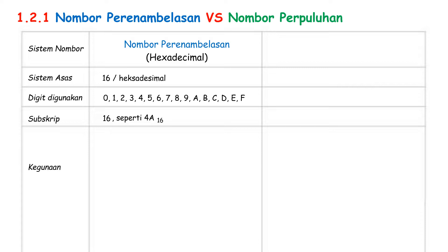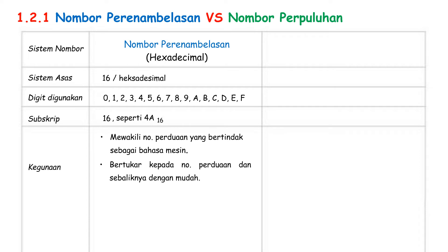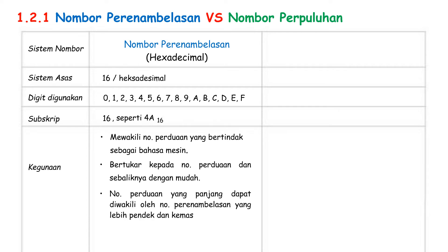So, what is the use of Nombor Perenamblasan? Why do we need to learn it? Nombor Perenamblasan can be used to represent Nombor Perduaan 0 and 1 as Bahasa Machine. It can convert to Nombor Perduaan and vice versa easily. Besides that, Nombor Perenamblasan can represent Nombor Perduaan in a shorter and neater way.